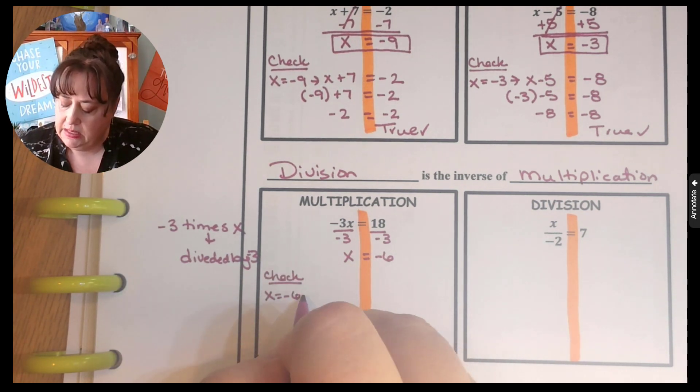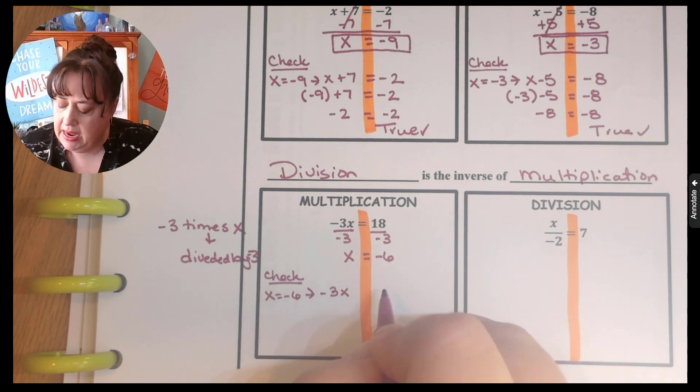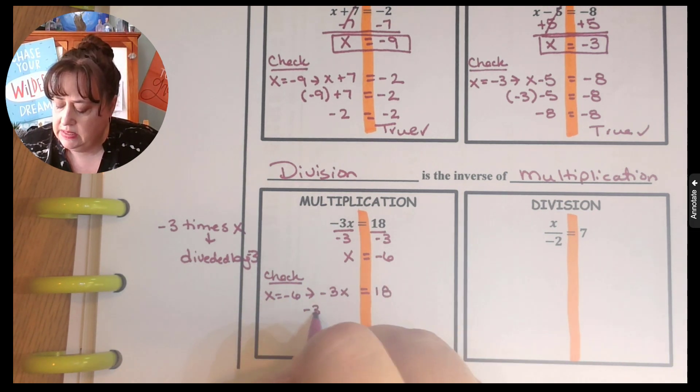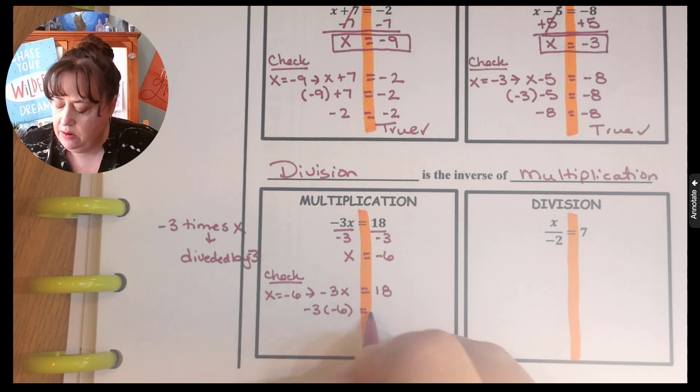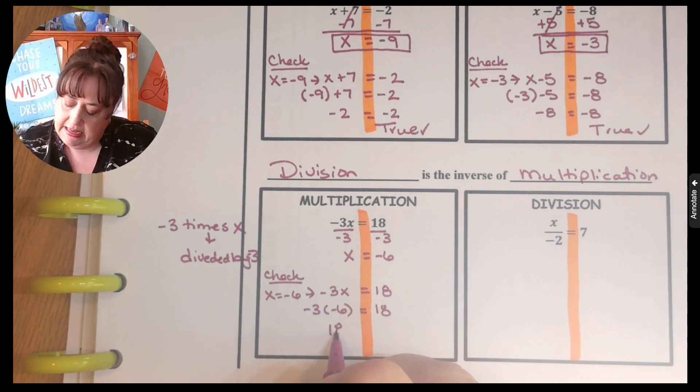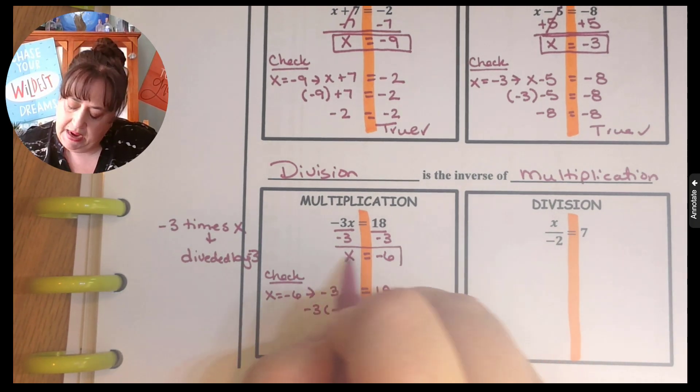So x equals negative six x into negative three times x equals 18. So does negative three times negative six equal positive 18? Yes, it does. This is my answer.